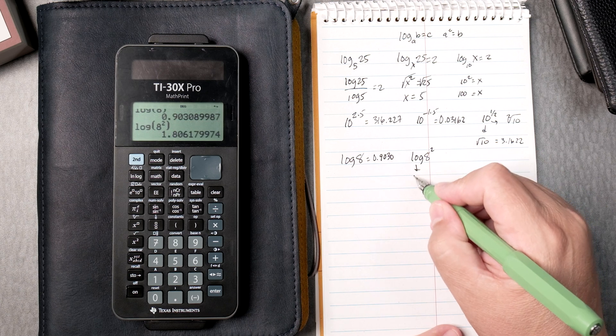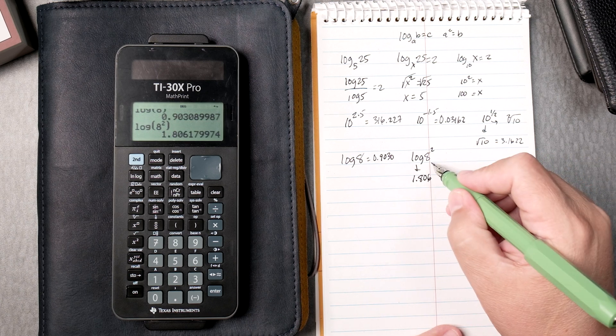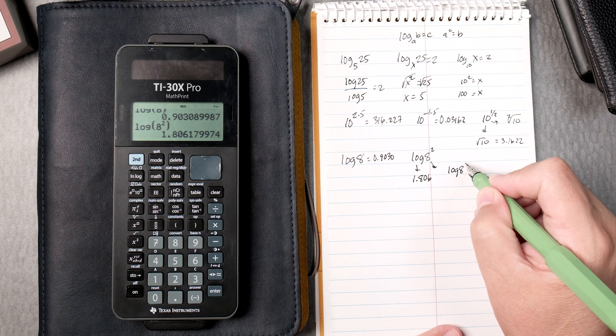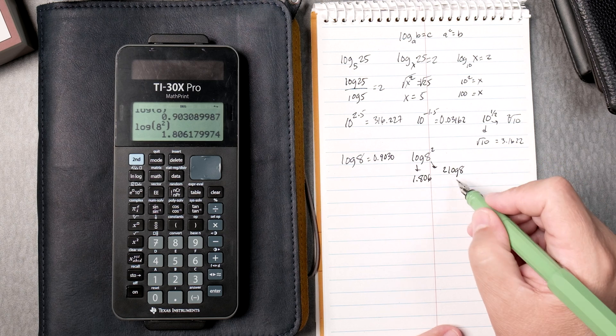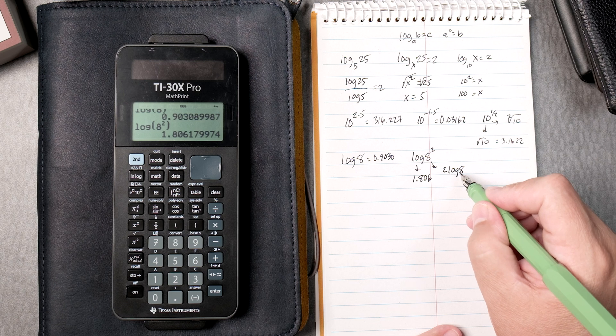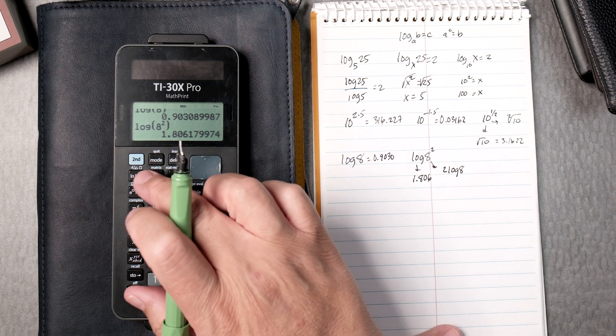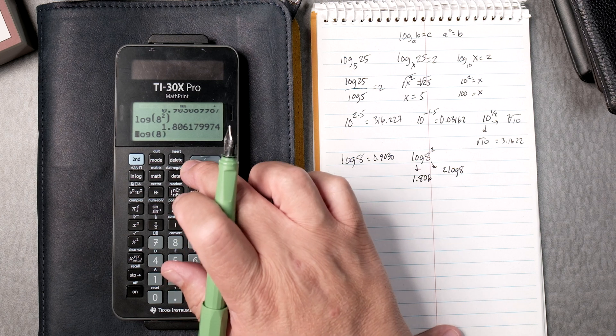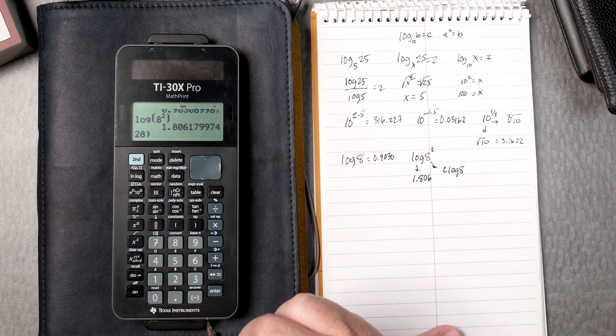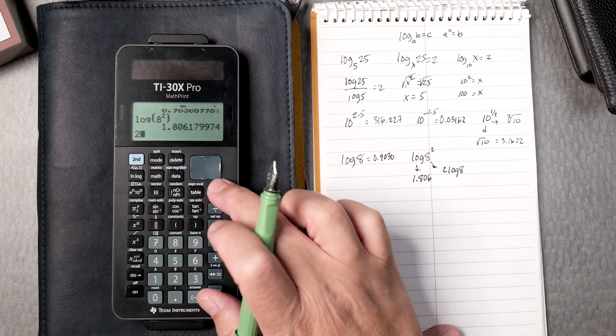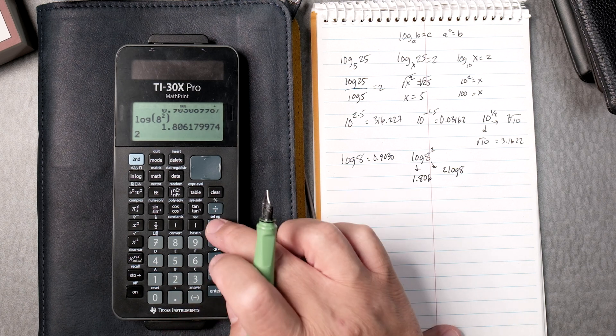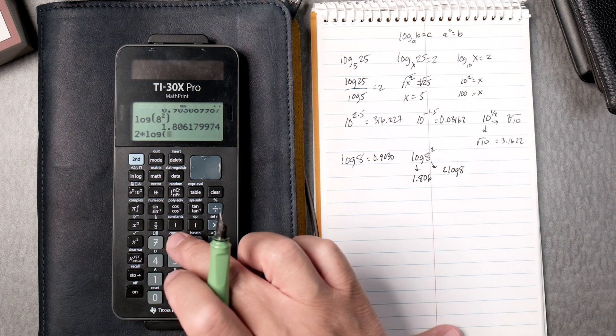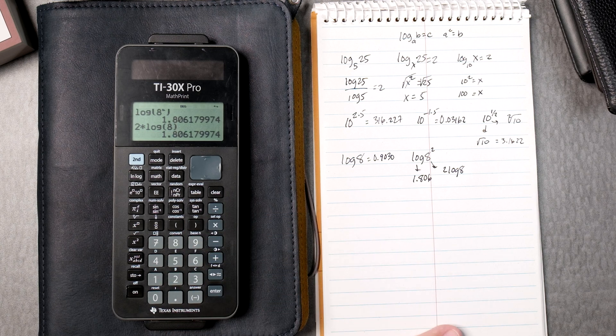It gives you 1.806, which is the same thing as the log of 8, and the 2 goes down. So you multiply the log of 8 twice. So you take log 8, and you could put the 2, I guess. Let's see. Can we put the 2? No, that's clear. We're going to go 2 times, press the log button twice, 8, close it, and it gives you the same answer.